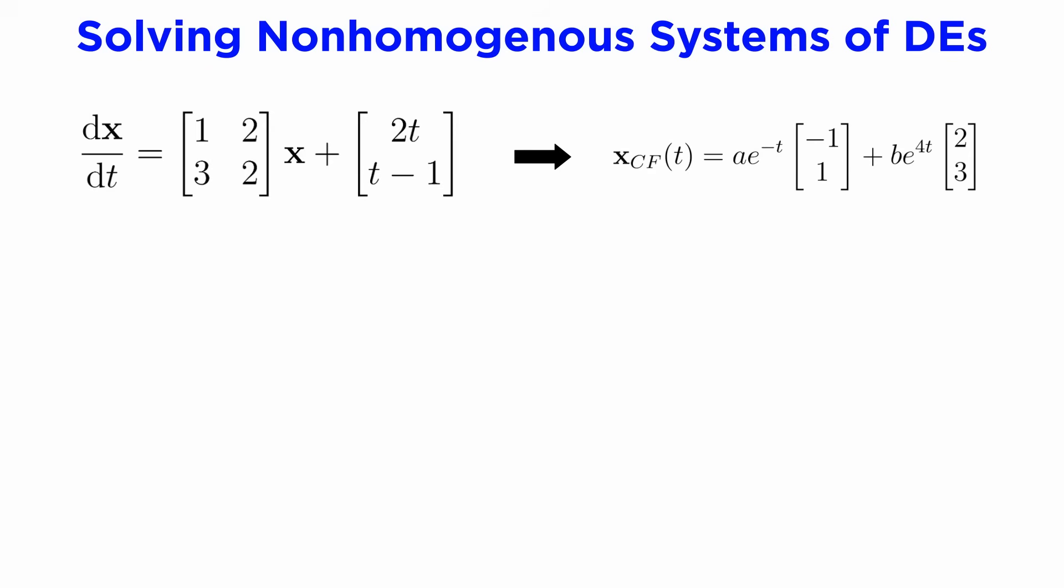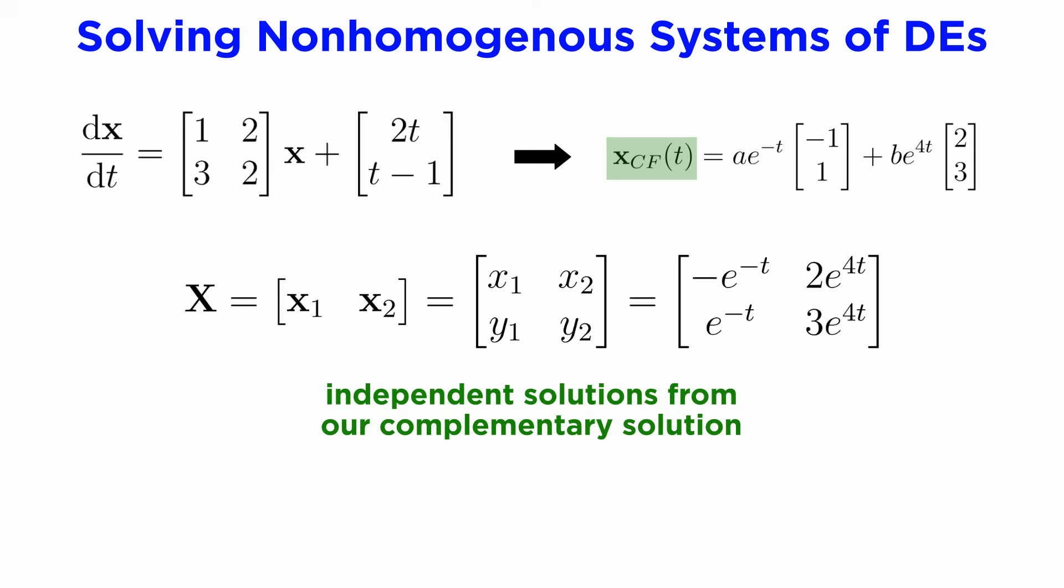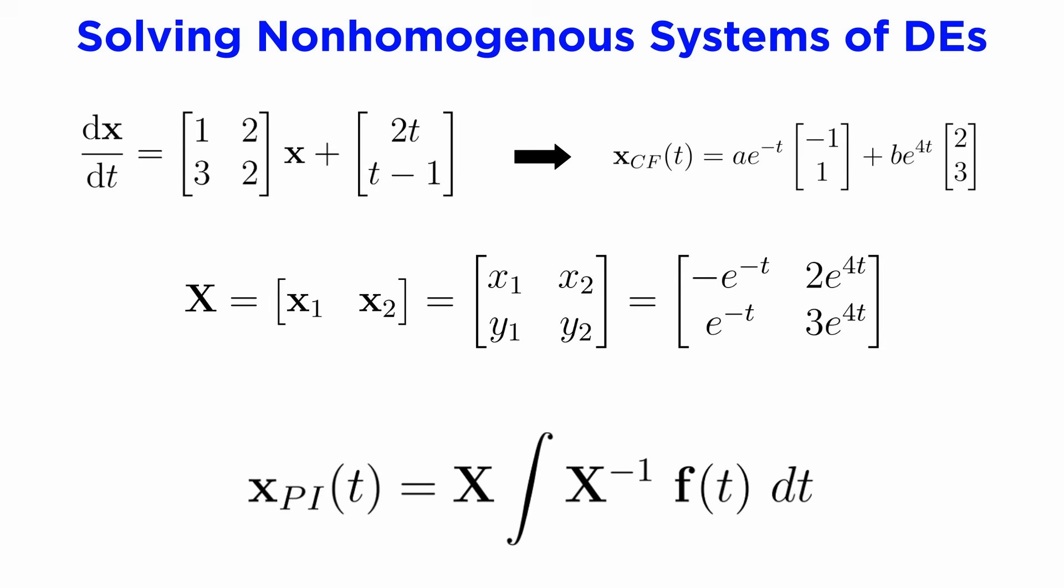If we want to use variation of parameters, we need to collect the independent solutions from our complementary solution into a matrix, capital X, which will act kind of like the Wronskian for our problem, defined like this, where each column of the matrix X is a linearly independent part of the complementary solution. The formula for variation of parameters then looks like this, giving us the particular integral as the matrix X times the integral of the inverse matrix of X times f of t dt, which is a lot easier to remember than the formula from before.